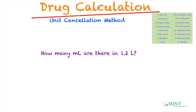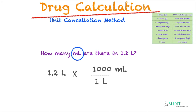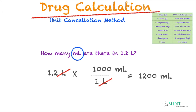How many ml are there in 1.2 liters? Again, we look for what the problem is asking — in this case, ml. We write down 1.2 liters, multiply that by the conversion: 1 liter equals 1,000 milliliters. We write it as 1 liter over 1,000 ml so we can cancel liters and be left with ml. The math: 1.2 times 1,000 divided by 1 gives us 1,200 ml.